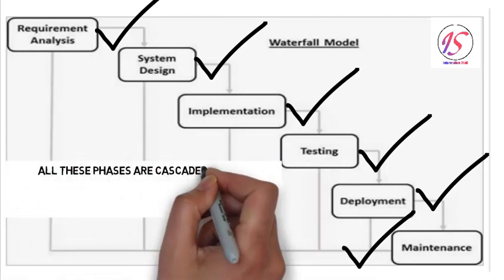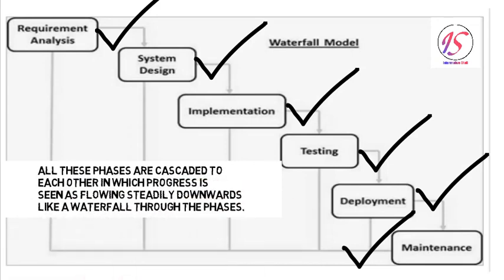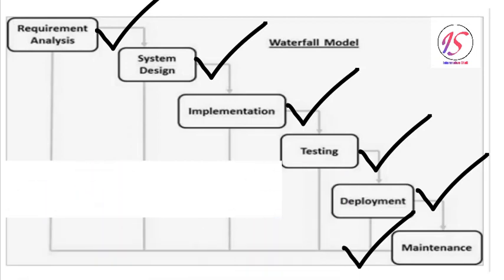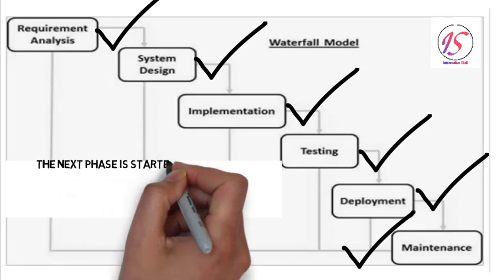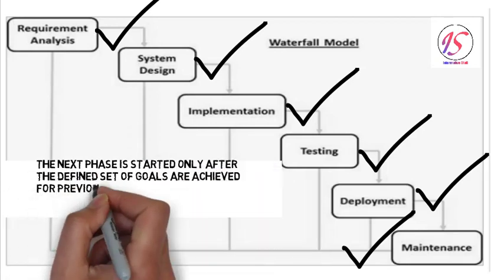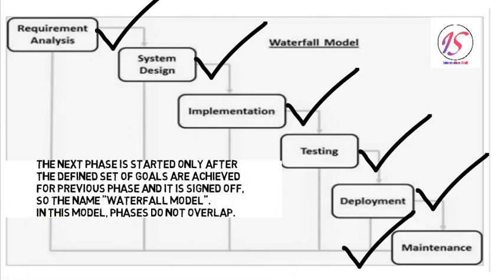All these phases are cascaded to each other, in which progress is seen as flowing steadily downwards like a waterfall through the phases. The next phase is started only after a defined set of goals are achieved for the previous phase and it is signed off.